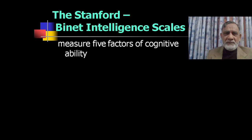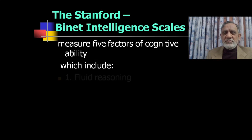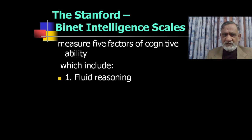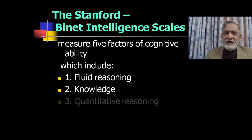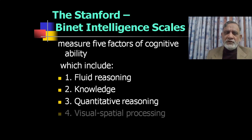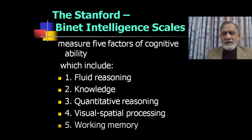The Stanford-Binet Intelligence Test measures five main cognitive ability factors: number one, fluid reasoning; number two, knowledge; number three, quantitative reasoning; number four, visual-spatial processing; and number five, working memory. Each one is explained with its own slide.